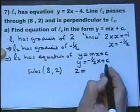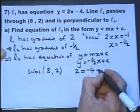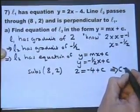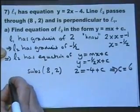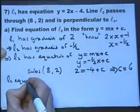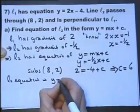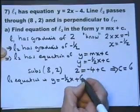So y is 2, x is 8, so minus a half of 8 is minus 4. So from this, we can suss out that c itself must be 6. So we've got the equation is y equals minus half x plus 6.